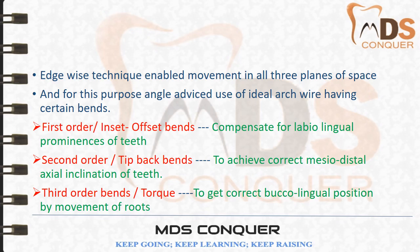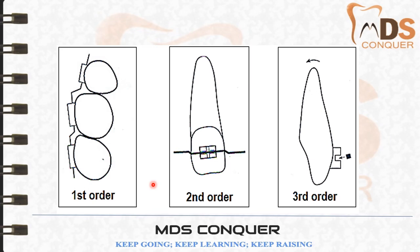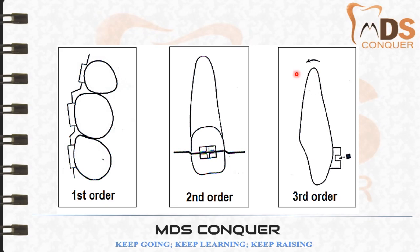In the diagram, the first order bends are shown in the occlusal view for labiolingual movement. The second order bends are shown in the frontal view for mesiodistal inclination. The third order bends are shown in the proximal or lateral view, where a twist in the wire produces torquing or uprighting of the teeth.